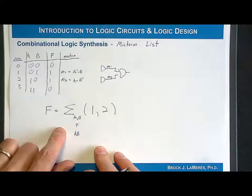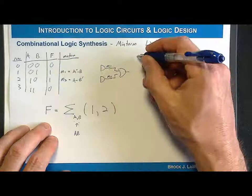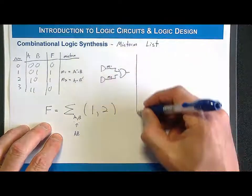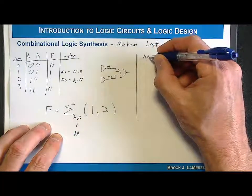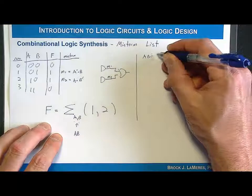It's very easy to scale this. For example, if I had a 3-input truth table with A, B, C and an F.